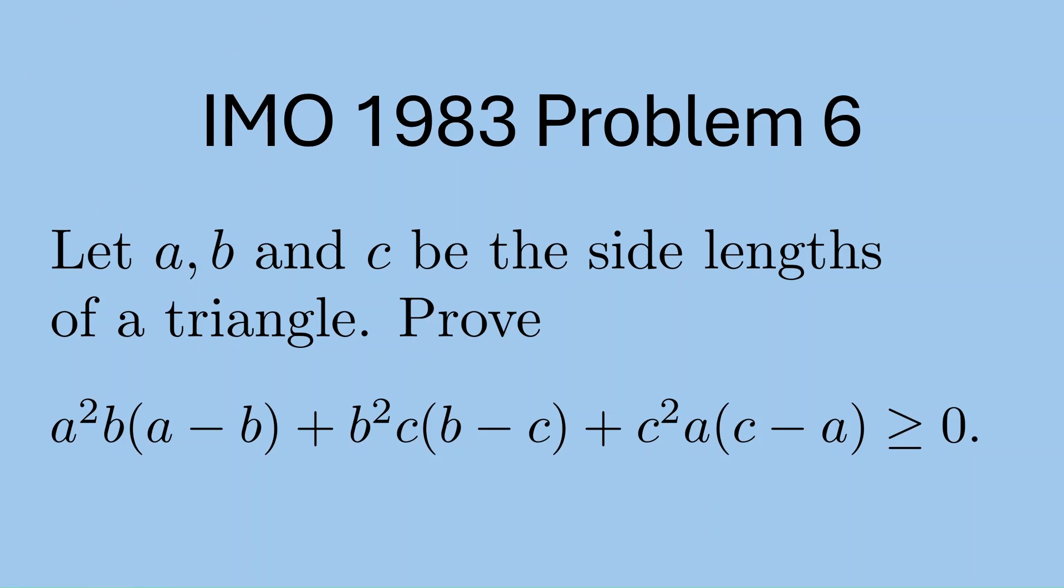Let a, b, c be the side lengths of a triangle. Prove that a²b(a-b) + b²c(b-c) + c²a(c-a) ≥ 0.